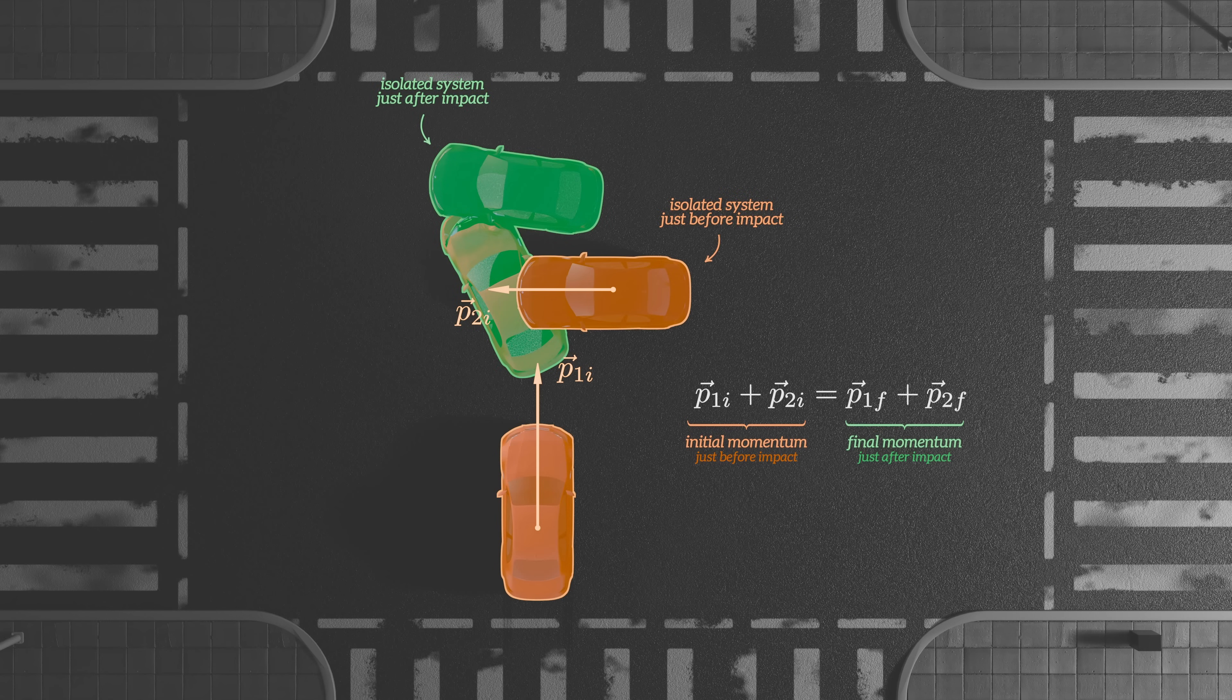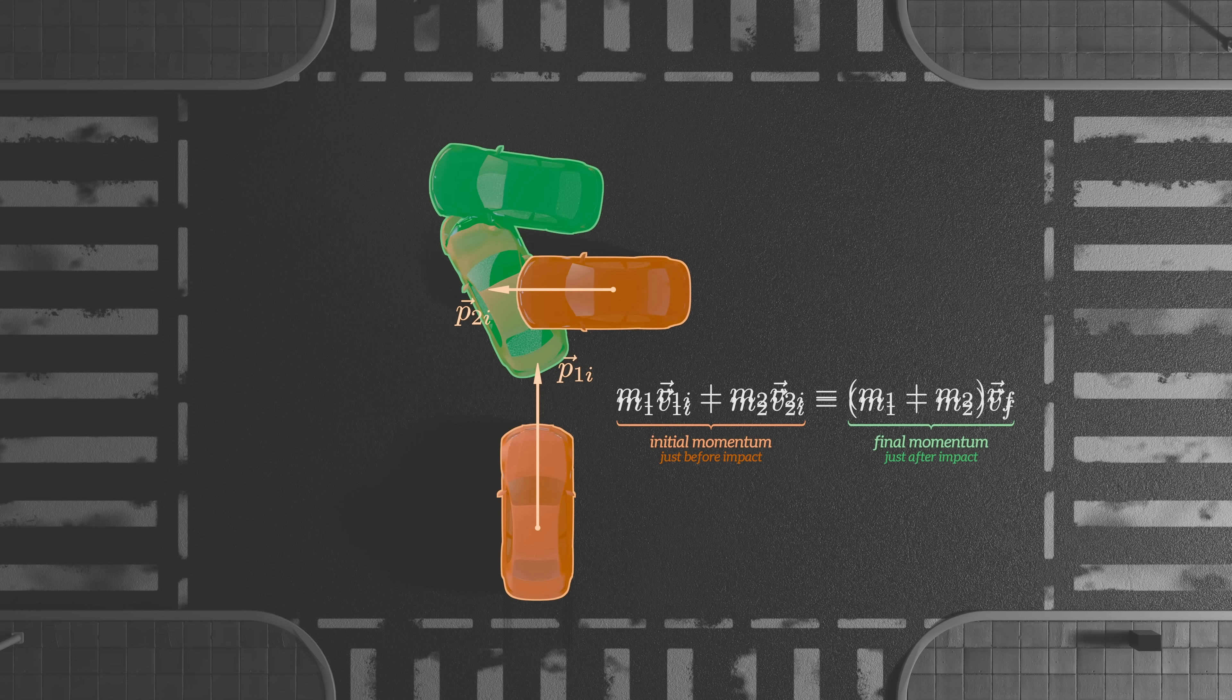Momentum is mass times velocity, which gives us this expression for momentum before the crash. After the crash, both cars are stuck together and move with the same velocity. So the momentum is equal to the mass of both cars, multiplied by their combined velocity. We can easily rearrange this equation and solve for the velocity vector, giving us the speed and the direction after the crash.